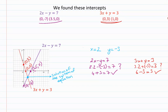The blue point is confirmed as x equals 2 and y equals negative 3. But sometimes it's not easy to read from a graph, so we can solve algebraically.